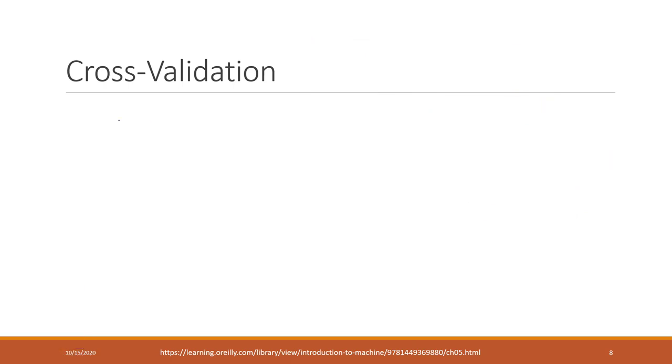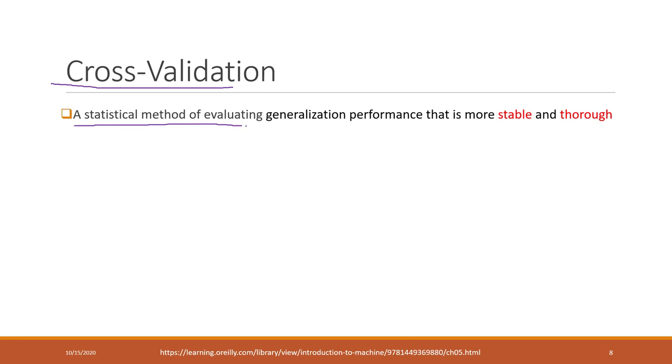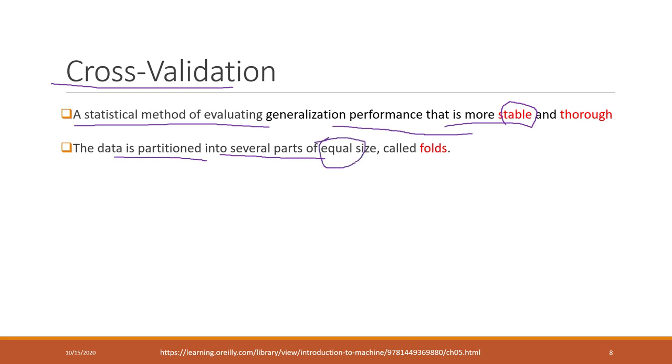That is where we introduce cross-validation. Cross-validation is a way that we can evaluate the performance so that it's more stable. The idea is that we split the data into multiple parts in relatively equal size.